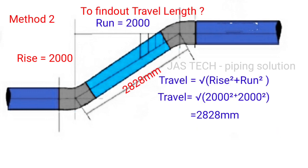Another method to find out travel length. Formula: travel equals the square root of rise squared plus run squared. We know rise and run values are each 2000 mm. So travel equals square root of 2000 squared plus 2000 squared. By using calculator, the result is 2828 mm.